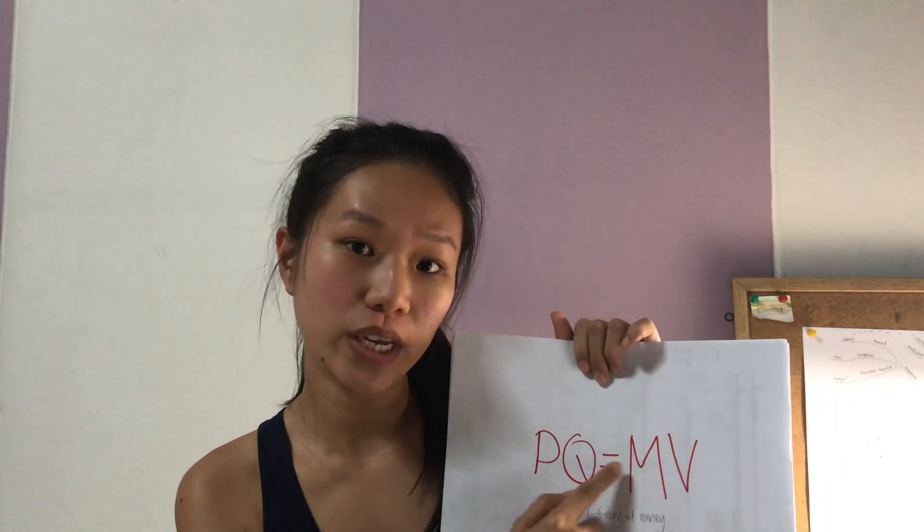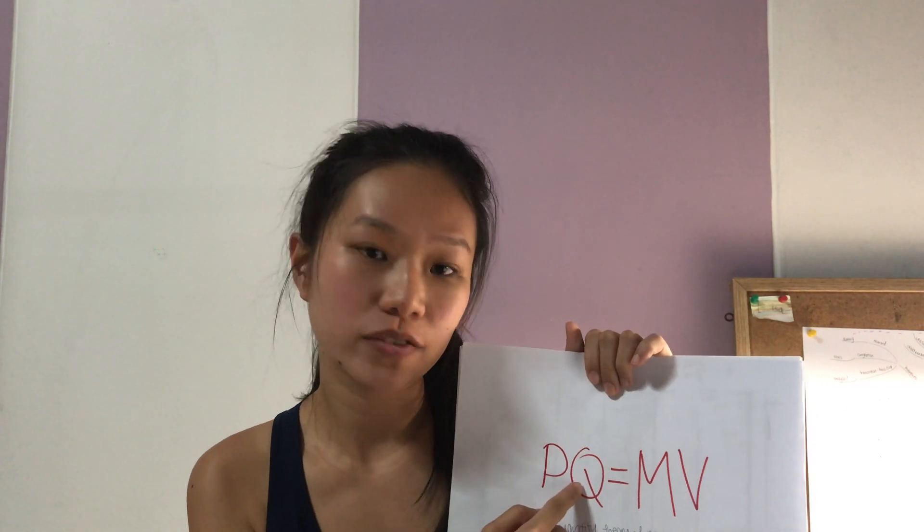It looks like a simple model: PQ equals MV. P is the price of goods, Q is the output or quantity of goods, M is the money supply, and V is the velocity. Velocity is how often the money or token changes hands with people in the network.